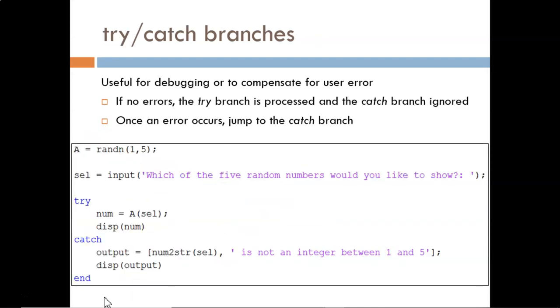Try-catch branching statements introduce a whole new concept: compensating for errors caused by users, bad data, bugs in the code, and so on.